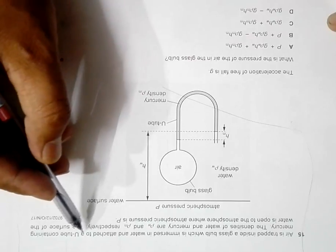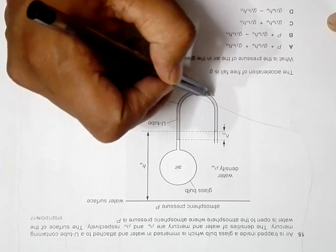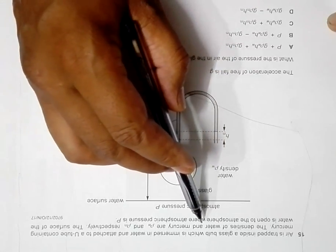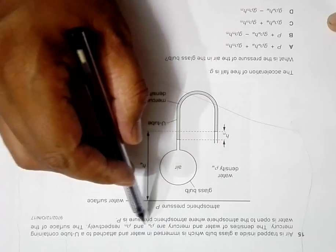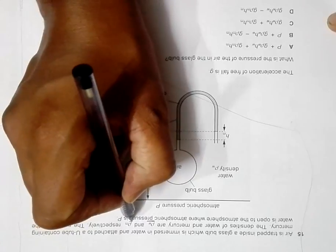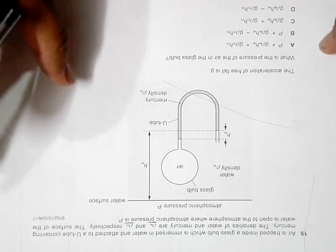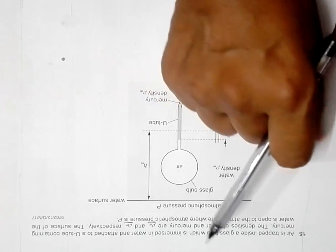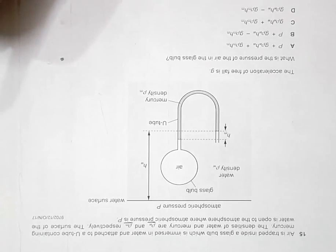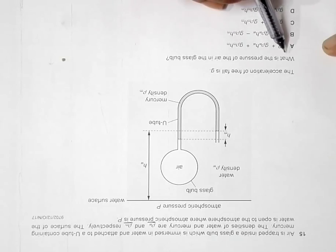The bulb is immersed in water and attached to a U-shaped tube over here containing mercury. So from here to here it's mercury. The densities of water and mercury are rho w and rho m respectively. So this is for water and this is for mercury. The surface of the water is open to the atmosphere, which is shown here.